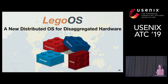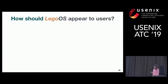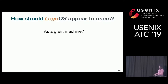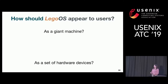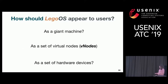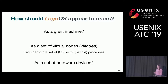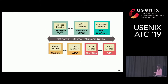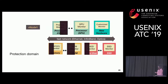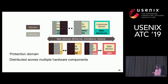With the split kernel idea, we build LEGO OS — a new distributed OS for disaggregated hardware. How should LEGO OS appear to users? We have two extreme design choices: on one end, appear as a giant machine and hide all disaggregated details; on the other end, expose the disaggregated nature as a set of hardware devices. We choose something in the middle, which we call vnodes — closer to a container, but not exactly — and this is familiar to application developers. We also support all common Linux APIs. One vnode can run on multiple devices, one device can run multiple vnodes, and resources are allocated on demand.